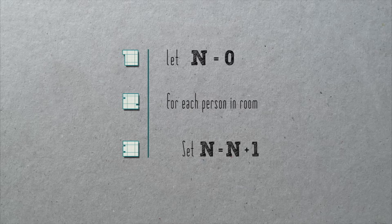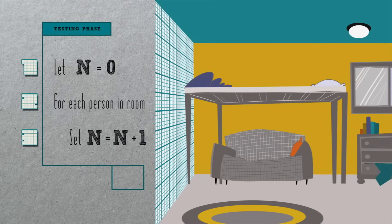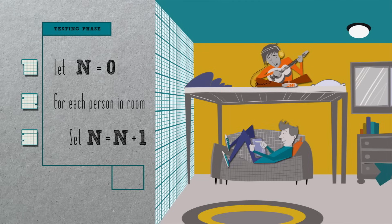Now, is this algorithm correct? Well, let's bang on it a bit. Does it work if there are two people in the room? Let's see. In line one, we initialize n to zero. For each of these two people, we then increment n by one. So on the first trip through the loop, we update n from zero to one.